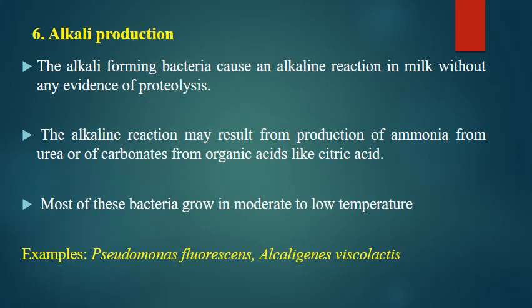Alkali production: alkali-forming bacteria cause an alkaline reaction in milk without evidence of proteolysis. The alkaline reaction may result from production of ammonia from urea or carbonates from organic acids like citric acid. Most of these bacteria grow at moderate to low temperatures. Examples include Pseudomonas fluorescens, a common spoilage organism that can grow at low temperature, and Alcaligenes viscolactis, the main cause of surface ropiness, which can also cause alkaline conditions or sweet curdling with no acid production.